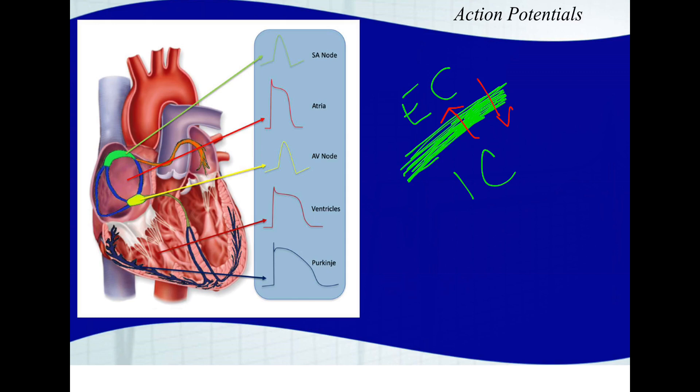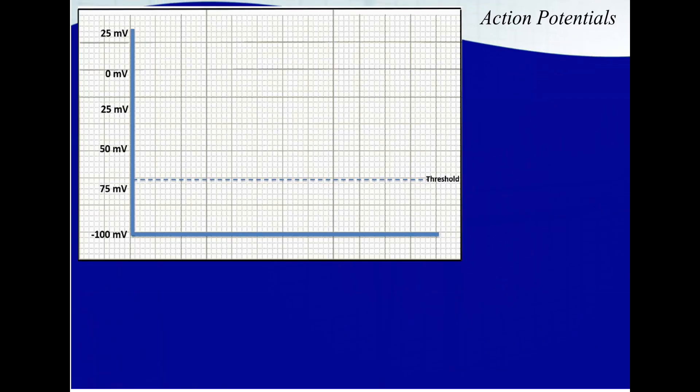It's important to know that different parts of the heart have different action potentials. As you can see here, I know these shapes might not mean a lot to you right now, but they will, I promise you. These are the membrane action potentials of the different areas of the heart.